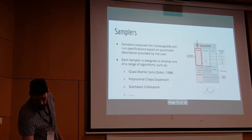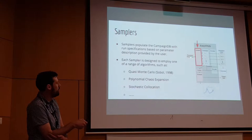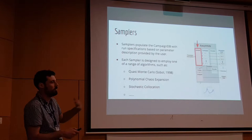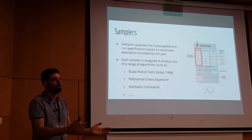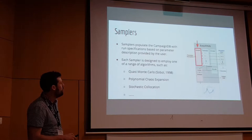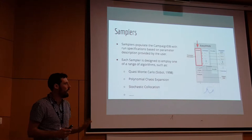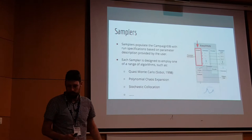Samplers' main job is essentially to generate run specifications which the campaign stores in its database. What the sampler generates depends on what kind of sampler you've chosen to plug in. If you're doing a polynomial chaos expansion it will generate some kind of runs, and if it's stochastic collocation it will do something else. The sampler can either add all runs at once or gradually, whatever is needed to keep this efficient on HPC.